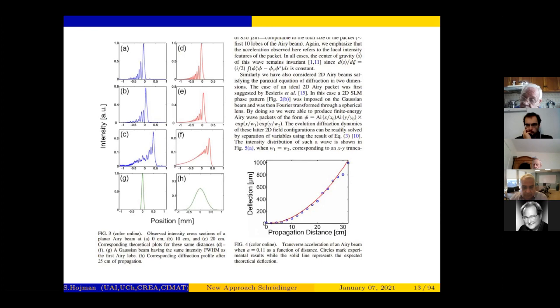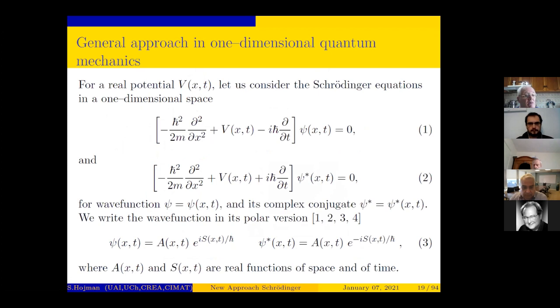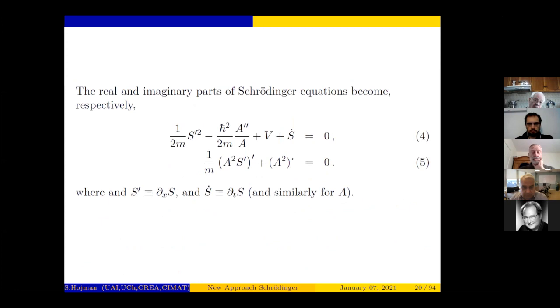Now I'm going to start with the Schrödinger equation. Equations 1 and 2 are the two complex conjugate versions of the Schrödinger equation for a real potential V. The Madelung-Bohm approach consists in writing the wave function, the complex wave function, in terms of two real functions: the amplitude and the phase. This is very well known.